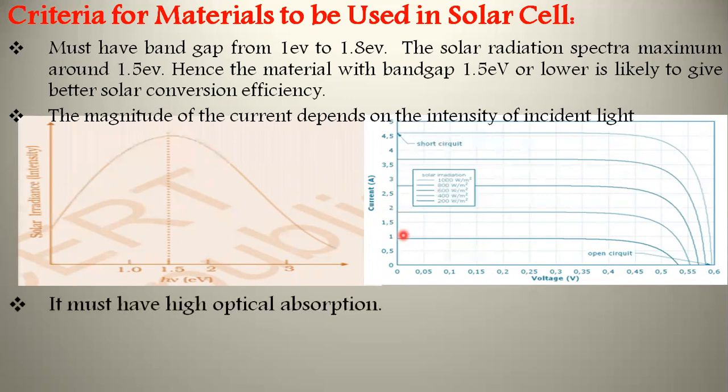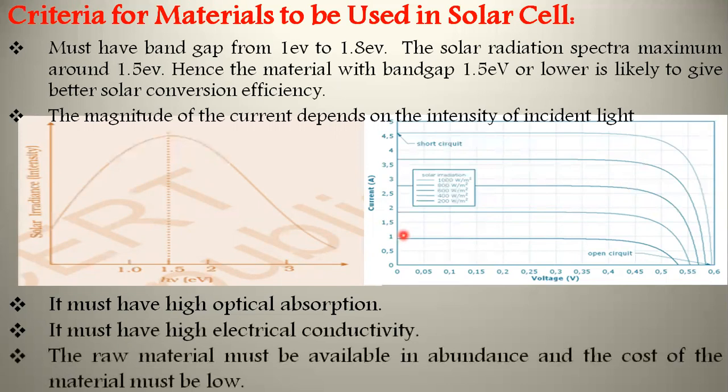In addition to bandgap, the semiconductor must have high optical absorption so it can absorb the incident photons. It must have high electrical conductivity so generated charge carriers can easily move from one side to another. The raw material must be available in abundance and the cost of the material must be low, so construction and maintenance costs are low. Examples of solar cell materials are silicon and gallium arsenide.